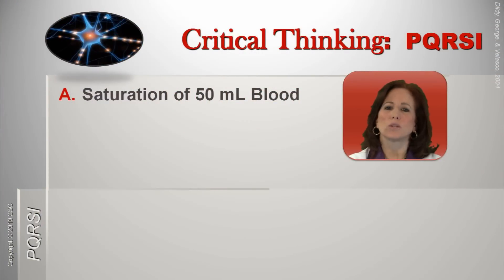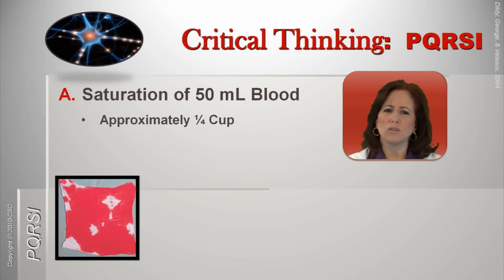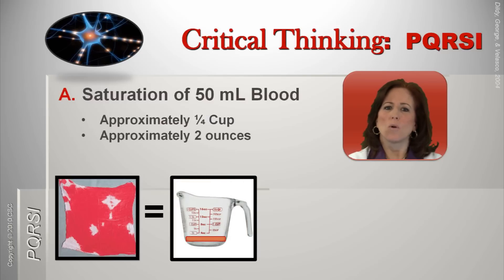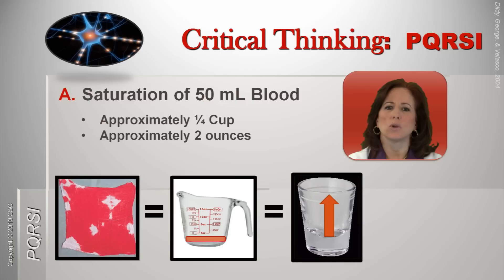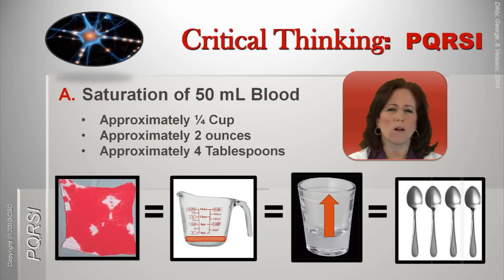One trick to improve visual assessments involves using visually comparable and memorable equivalents. A quarter cup or full shot glass equals 60 milliliters or 2 ounces. Therefore, this saturated sponge of 50 mLs is equal to approximately one-quarter cup, a full shot glass, or 4 tablespoons.